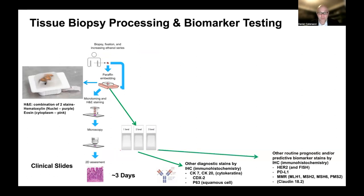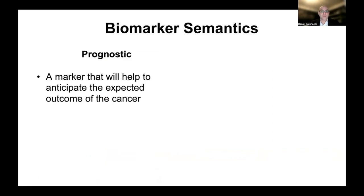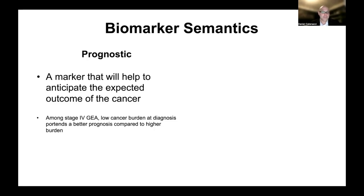In addition to routine histological assessment, the pathologist will have other slides made and stained for specific biomarkers. We'll talk about prognostic versus predictive biomarkers. A prognostic biomarker helps anticipate the expected outcome of the cancer. For example, a patient diagnosed with stage 4 gastroesophageal adenocarcinoma who has a low burden of cancer disease — just one small liver lesion — has a better prognosis than a patient with multiple liver spots and spread to the lung, bone, and peritoneal cavity.